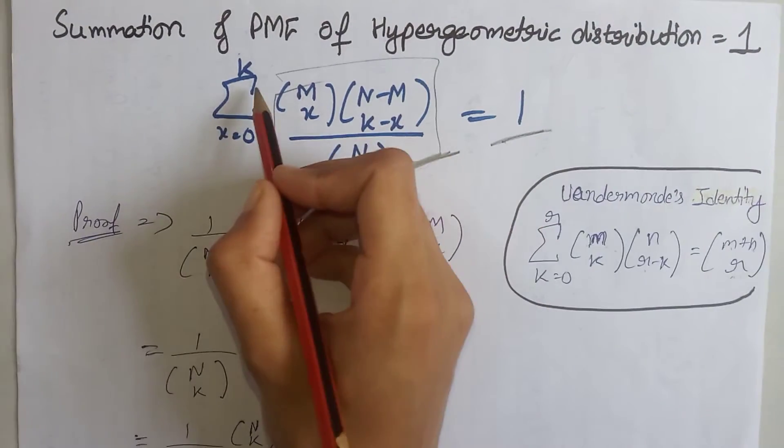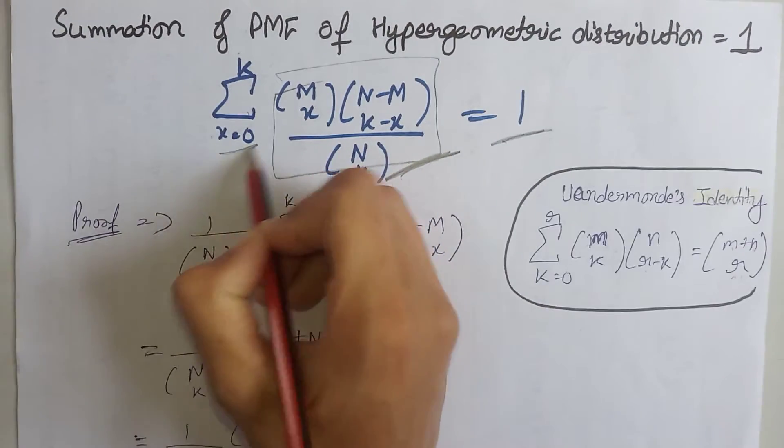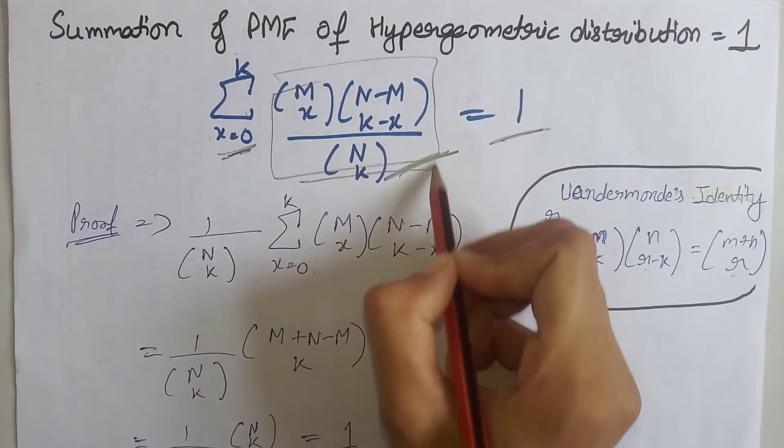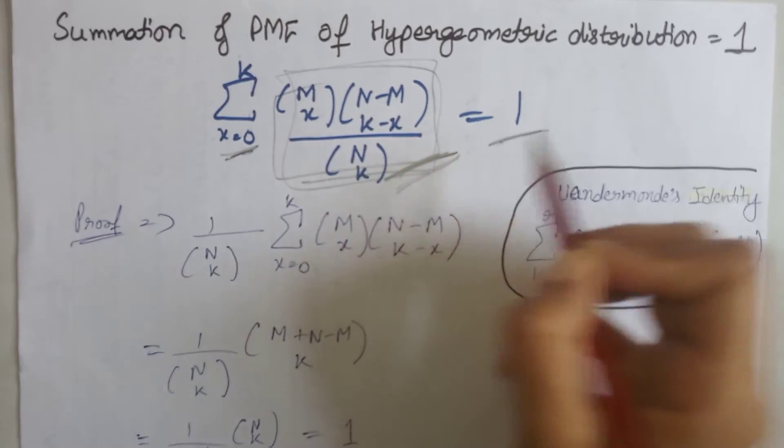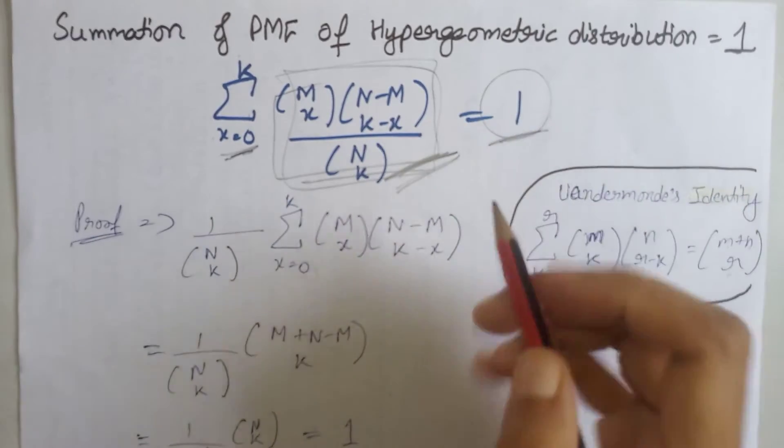Now, we will prove that the summation over all values of x of the PMF of the hypergeometric distribution, that is the probability mass function, equals 1. So let's start the proof.